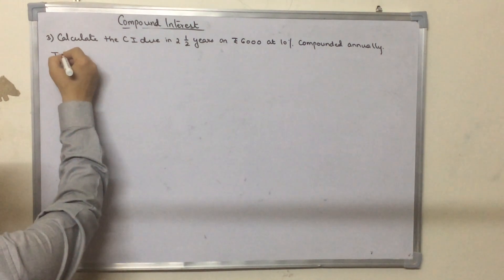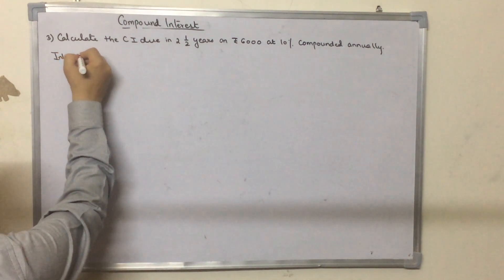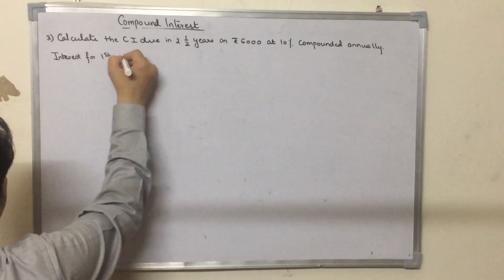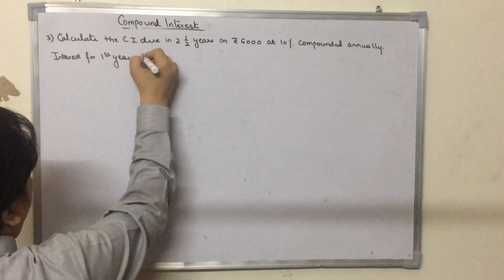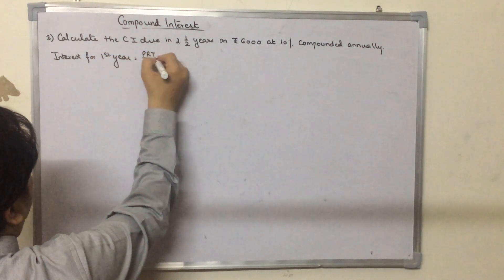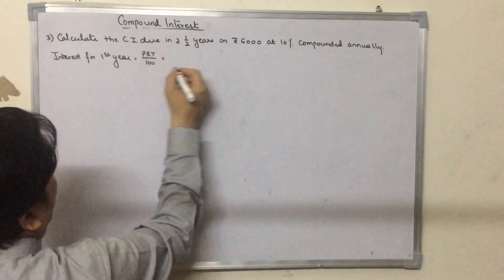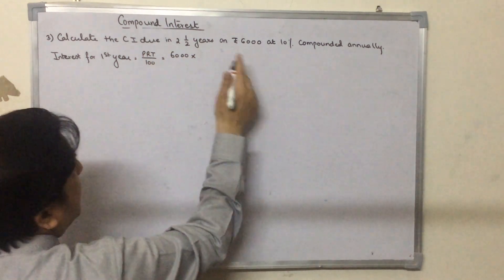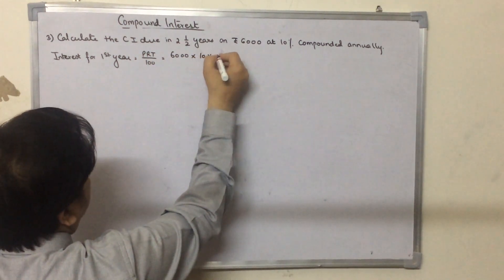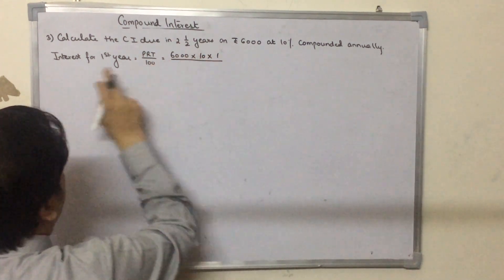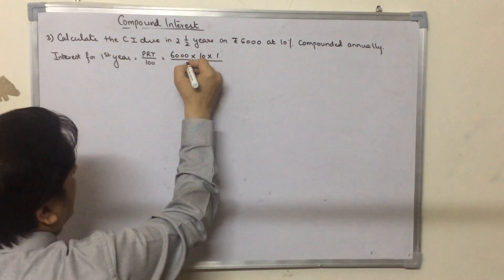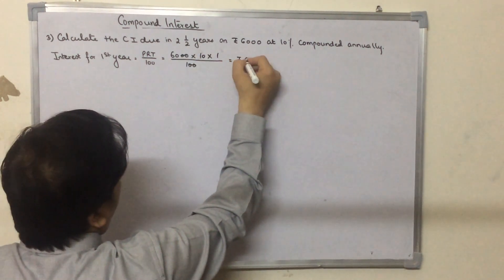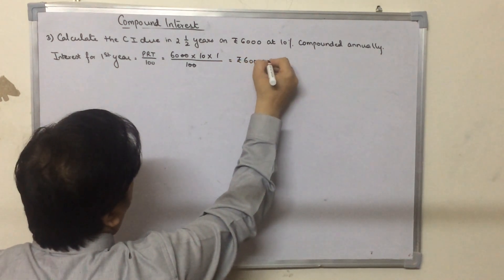We first calculate the interest for the first year. Interest for the first year will be given as PRT upon 100, wherein the principal will be 6000, the rate of interest is 10%, and the time will be 1 because we are only calculating it for the first year, and this will be divided by 100. So for the first year, the interest turns out to be 600 rupees.